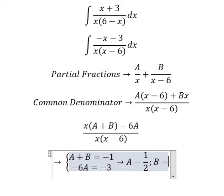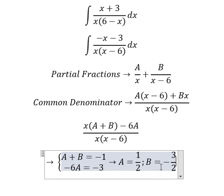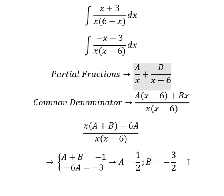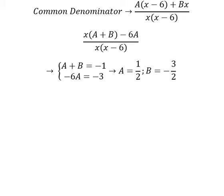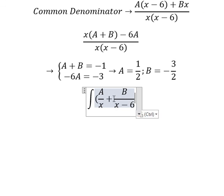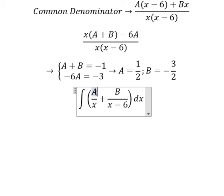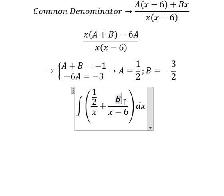So we put A and B. A is about 1 over 2, B is about negative number 3 over 2. And now we can get the final answer.